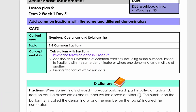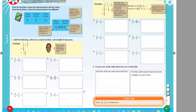Good day. Today we're doing lesson plan number 5, Grade 7, Term 2. Our topic is adding common fractions with the same and different denominators. It links to the DBE workbook worksheet 33.